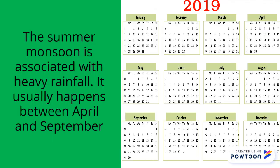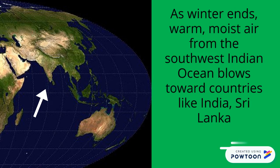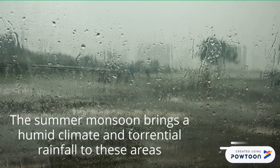The summer monsoon is associated with heavy rainfall. It usually happens between April and September. As winter ends, warm, moist air from the southwest Indian Ocean blows towards countries like India and Sri Lanka. The summer monsoon brings with it a humid climate and torrential rainfall to these areas.